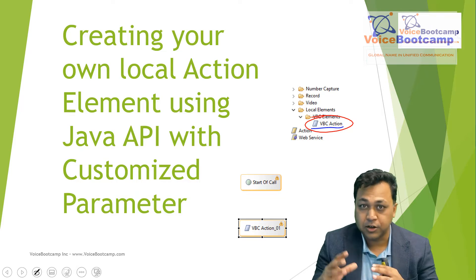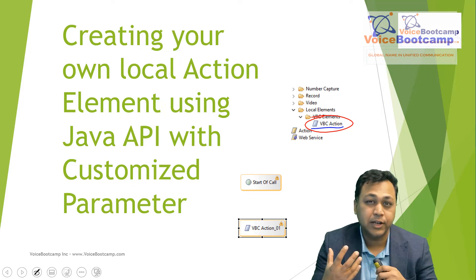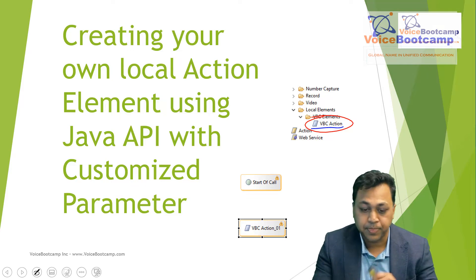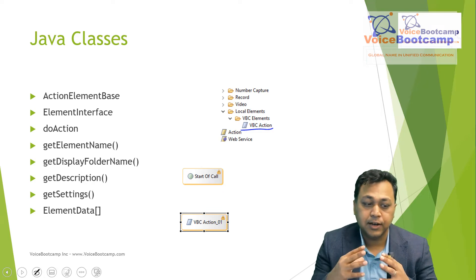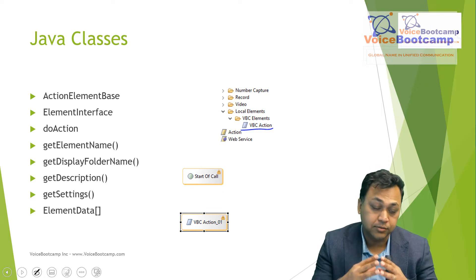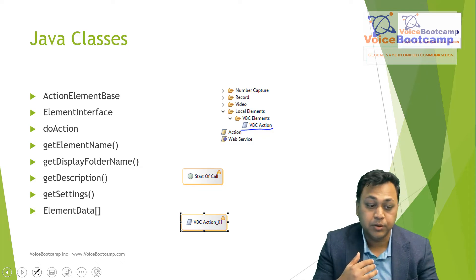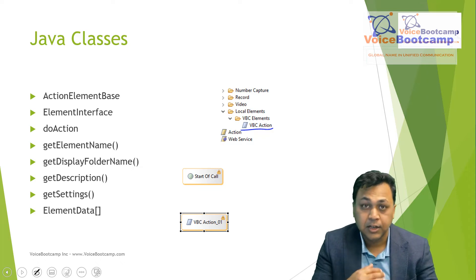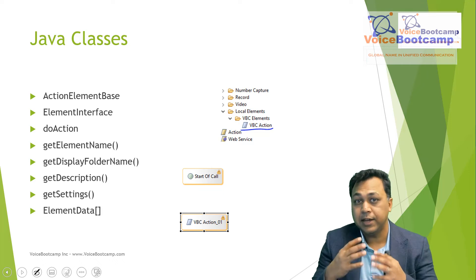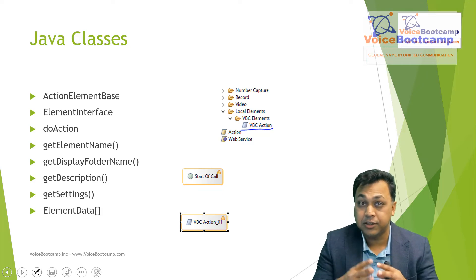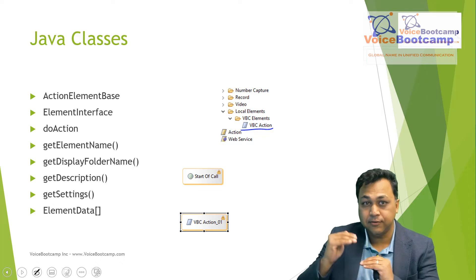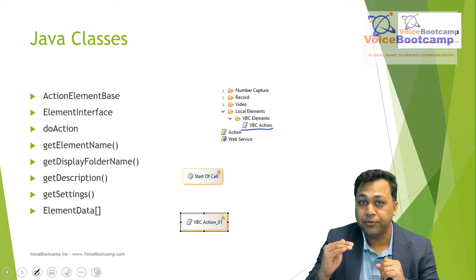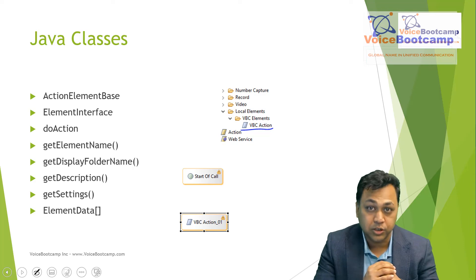This may not be a fully functional element that you'd want to use in production, but it will give you an idea of where to get started. To create this, you're going to use various actionable APIs. For example, your element will be based on Action Element Base — similar to the Java API that works with each action — but with an interface that allows you to drag and drop within your Call Studio.